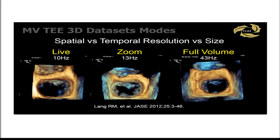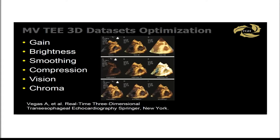You can change gain, brightness, smoothing, compression, vision, and chroma on your data set. Buttons are made to be pushed — understand your knobology, and use it in a stressless setting. Take a 3D data set of a normal mitral valve and play with it, because no one will ask you where the prolapse is. That's how you learn — all the experts in this room learned through exploration, a voyage of discovery.